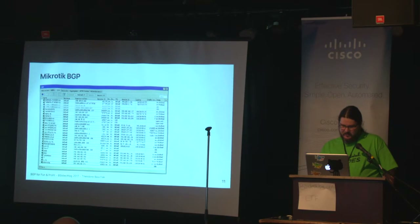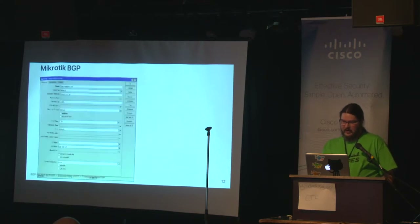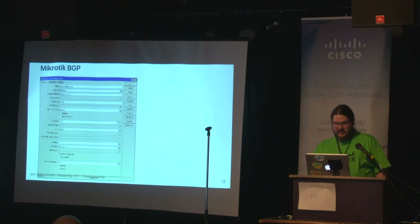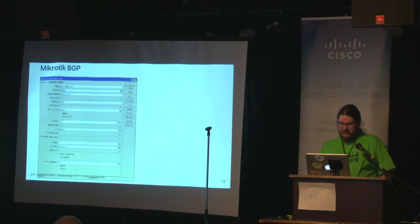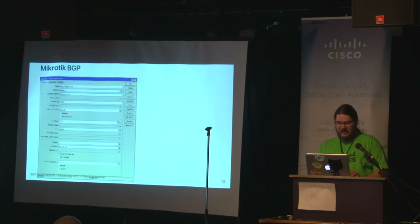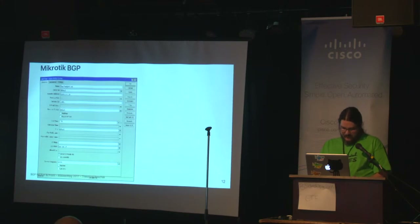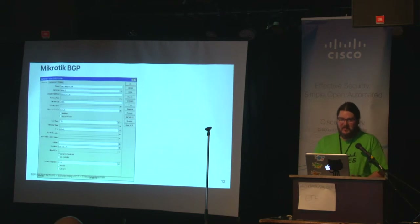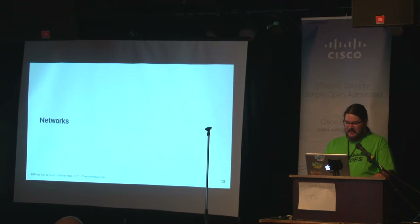The largest peer is about 670,000 routes — times two because I have two connections to my upstream. The configuration for an individual peer lists the name, the BGP instance it's connected to, the remote address, and the remote AS number — which is really important; if you mess up the remote AS it will not connect. There are timeout values and filtering specified, and at the bottom a default originate value set to 'never,' because I never want to send a default route to my upstream.